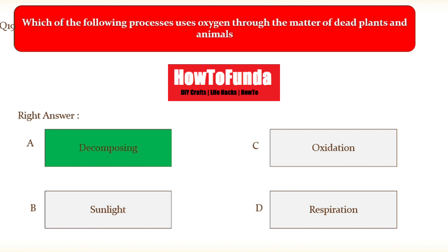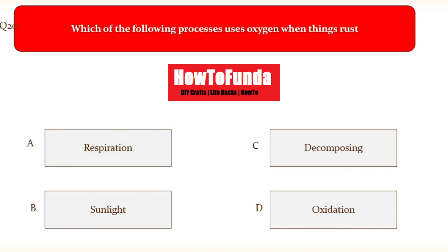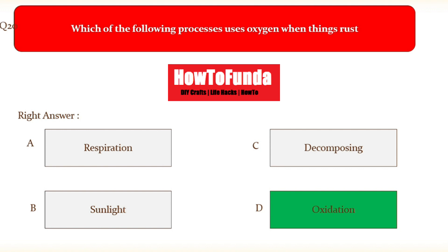Decomposing is the process that uses oxygen through the matter of dead plants and animals. The last question, question number twenty: which of the following processes uses oxygen when things rust? Option A respiration, option B sunlight, option C decomposing, option D oxidation. The right answer is oxidation — oxidation is the process that uses oxygen when things rust. With this we are ending this quiz, hoping you guys got a clear idea about the questions people might ask you on the oxygen cycle and carbon cycle.